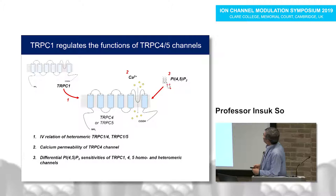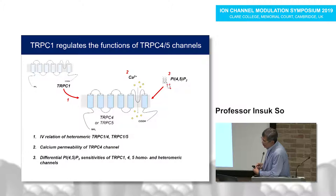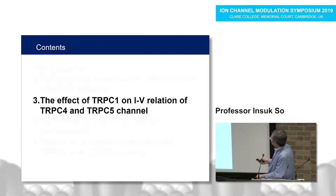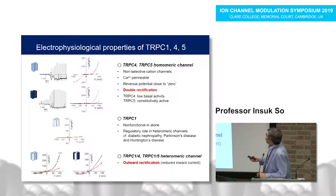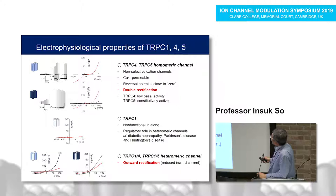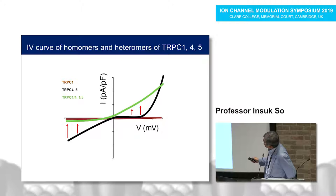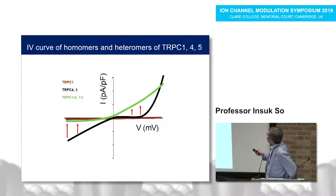Next, we investigated the effect of TRPC1 on TRPC4 and TRPC5 channels. In this talk, I will present the first two effects of TRPC1 as a negative regulator. As many researchers have already shown, TRPC1 changes the IV relation of TRPC4 and TRPC5 channels. TRPC4 and TRPC5 channels have a reversal potential close to zero and show a double rectifying IV curve. TRPC1 is non-functional, and in case of TRPC1/4 and TRPC1/5 heteromeric channels, they show an outer rectifying IV curve.